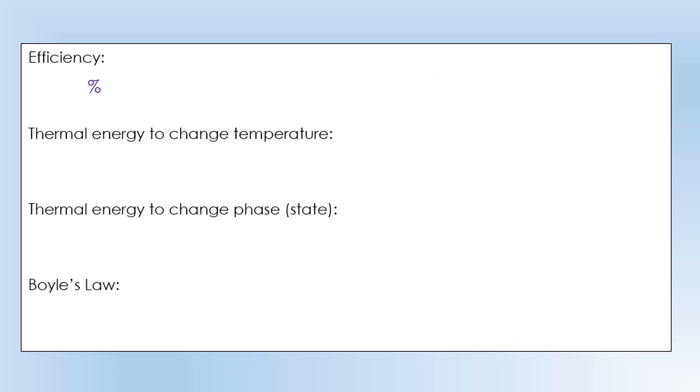Moving on to efficiency, which is usually expressed as a percentage, but otherwise it's actually unitless. There's two ways of calculating it. We can do useful energy over input energy, or we can do useful power over input power. Either of those two will give you an efficiency, and you multiply by 100% to give you efficiency as a percentage.